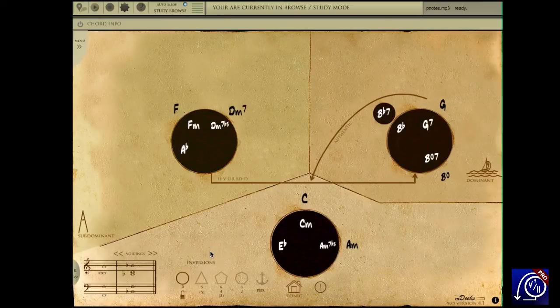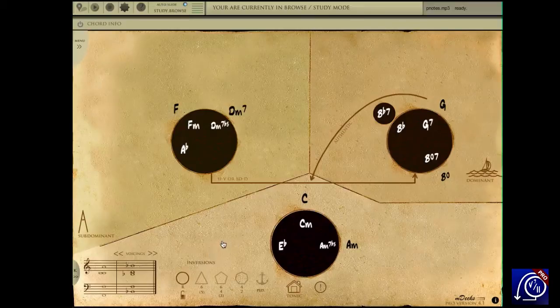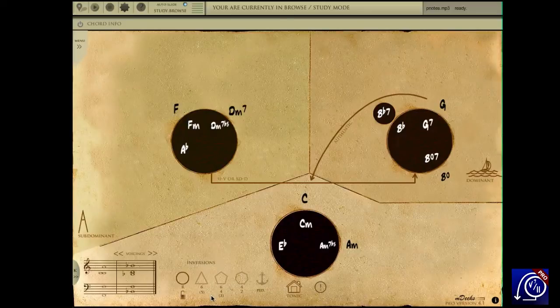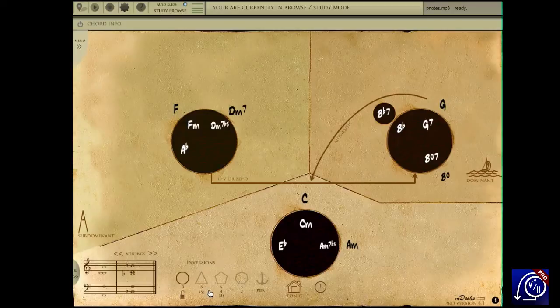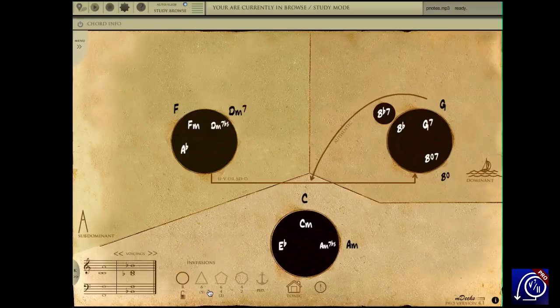Let's say we want to play C major in first inversion. I tap on the triangle labeled 6-5. The triangle, which has three sides, represents the bass playing the third of the chord. Notice the blinking line indicating the next inversion to be played.